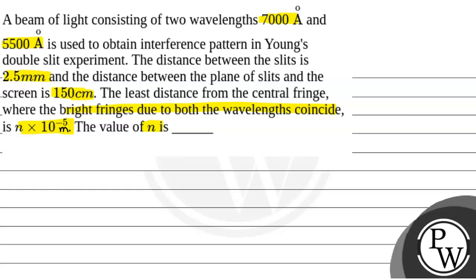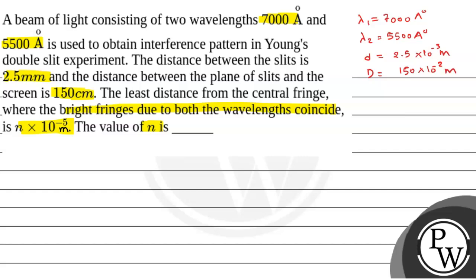In this question, we are given two wavelengths: λ1 = 7000 Å and λ2 = 5500 Å. The slit width d = 2.5 mm = 2.5 × 10⁻³ m, and capital D, the distance between the slit and the screen, is 150 cm = 1.5 × 10⁻² m... wait, that is 1.5 m. This is the information given.